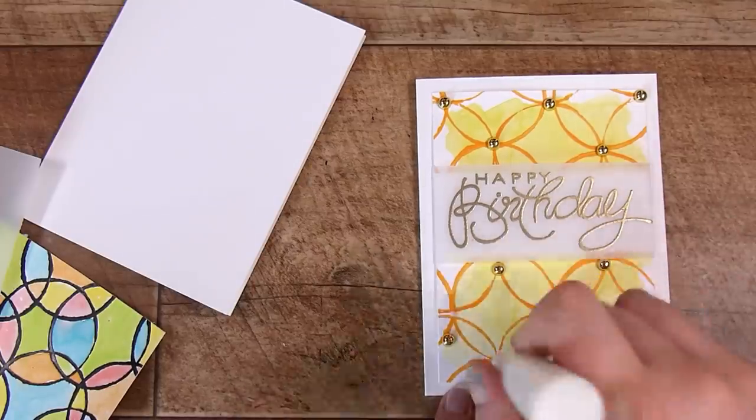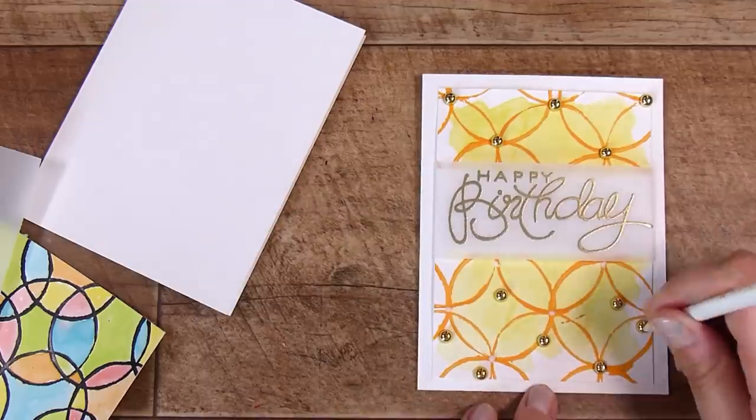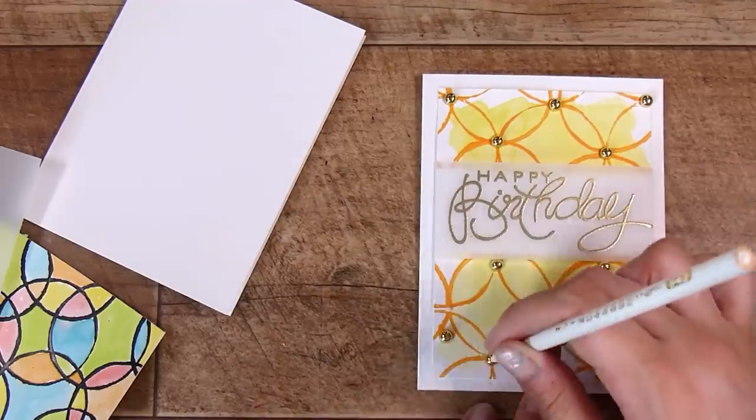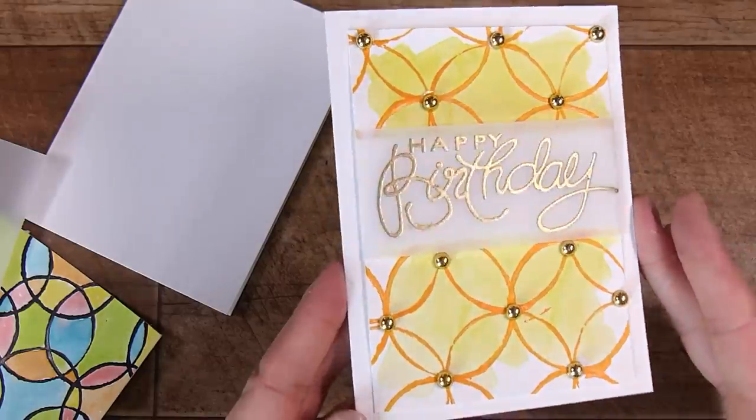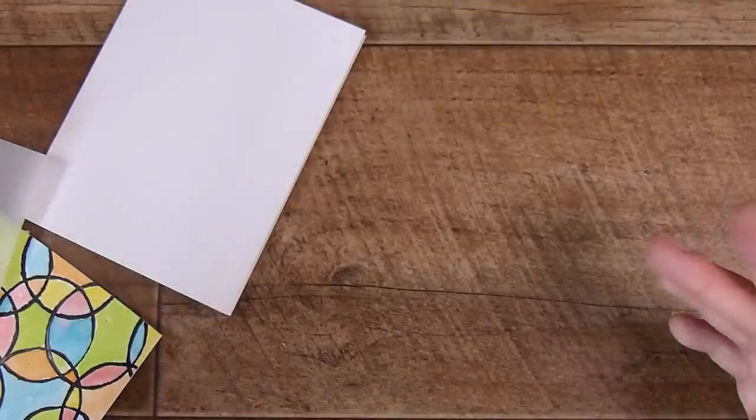So I'm going to pop a little dot of the Ranger Multi-Medium in the matte finish - that's what's inside the glue bottle. And here is our first card all finished - gorgeous and simple but created with a cardboard roll.